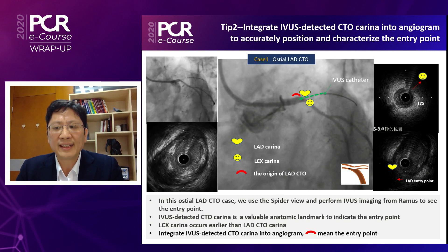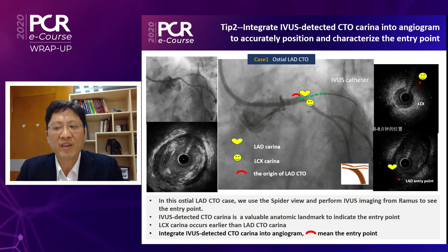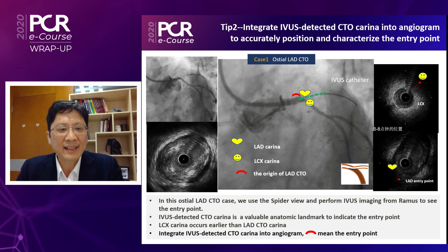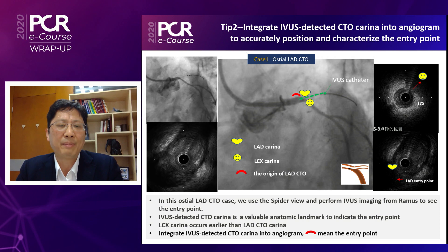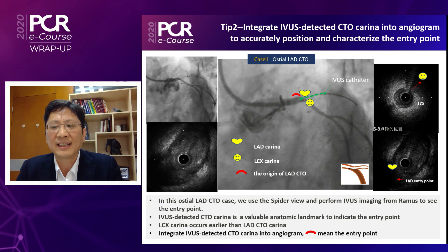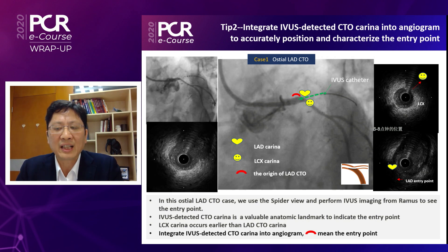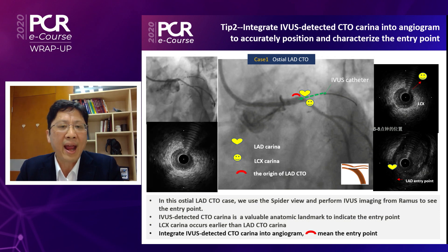We integrate IVA to detect the CTO corner into the angiogram to accurately position and characterize the entry point. In this ostial LAD CTO, we use the spider view and perform IVA imaging from the ramus to the CTO point. In this picture, the red arc means the entry point. So it's very clear — we can see where is the entry point of this ostial LAD CTO.